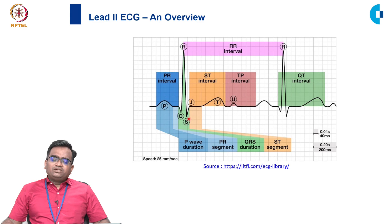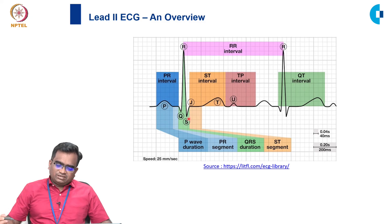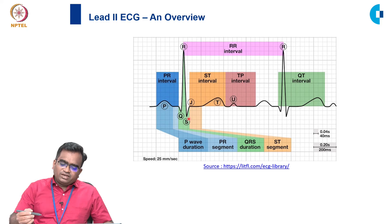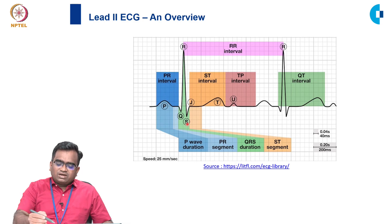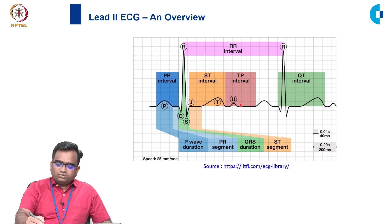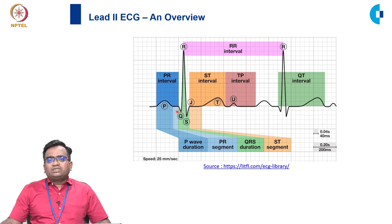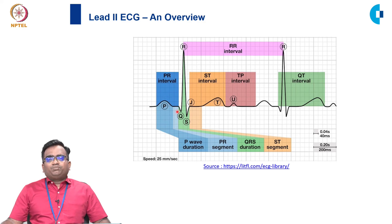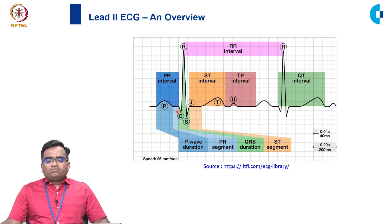A Lead 2 ECG recording from the 12-lead system provides a graphical representation showing distinct waves. These waves are labeled P-wave, Q-wave, R, S, T, and U. The QRS complex refers collectively to the Q, R, and S waves. Any ECG from the 12-lead system contains a P-wave, QRS complex, T-wave, and U-wave, though the U-wave may not always be visible but should still be considered.